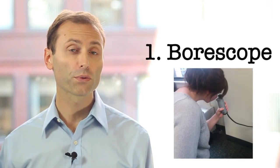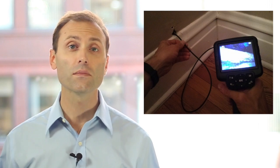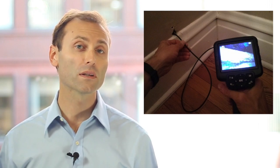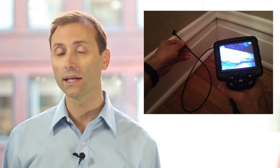Boroscopes help you look into a wall through a small hole. Boroscopes come with varying diameters for their camera heads, some even less than 6mm in diameter. The smaller the head, the smaller the needed opening.